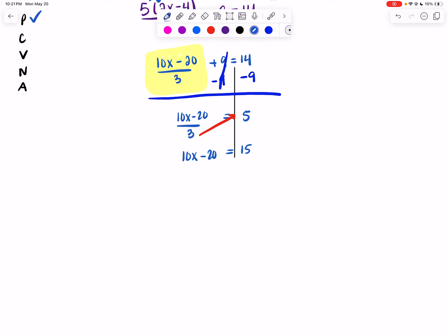And now we ask ourselves, how do we get rid of our subtract 20? Well, we add 20 to both sides of our equation. So my 20s cancel, and now I'm left with 10x equals 35.